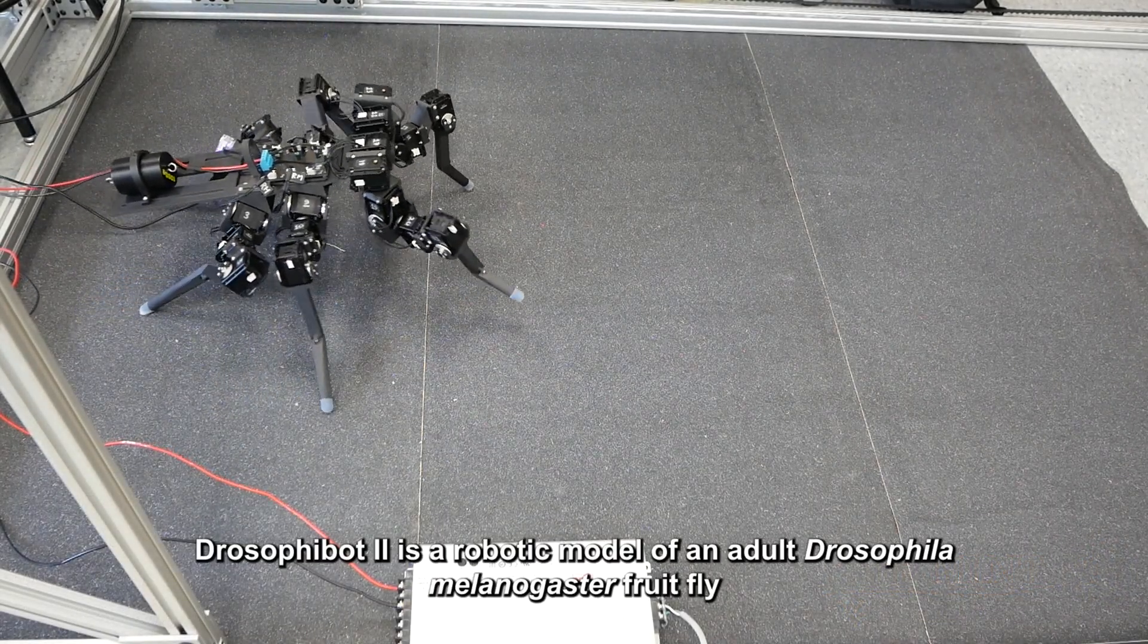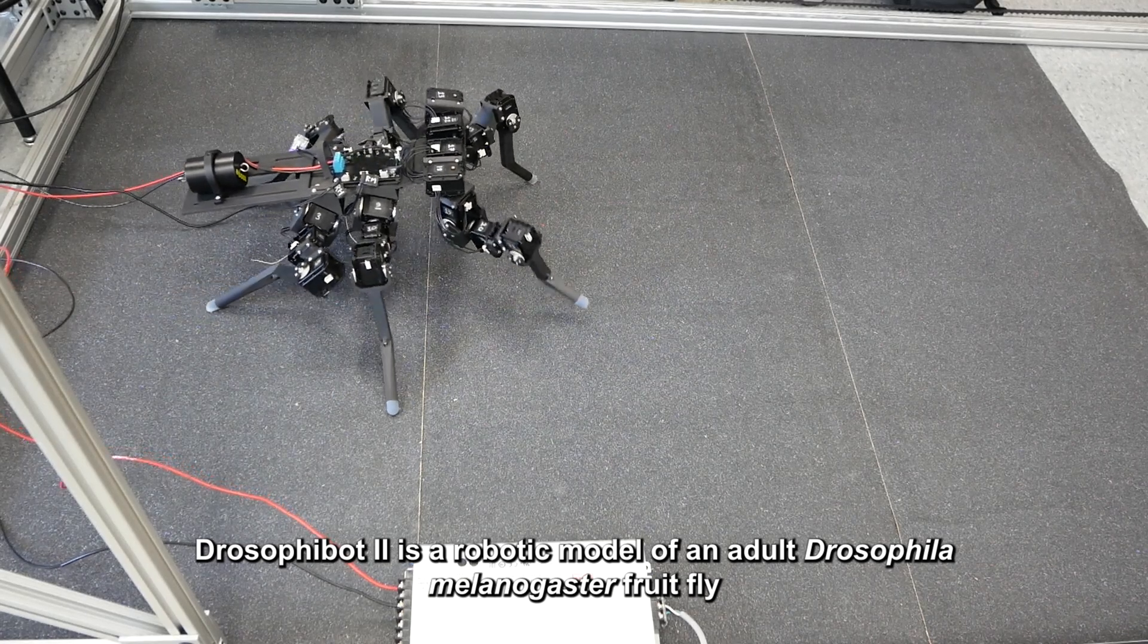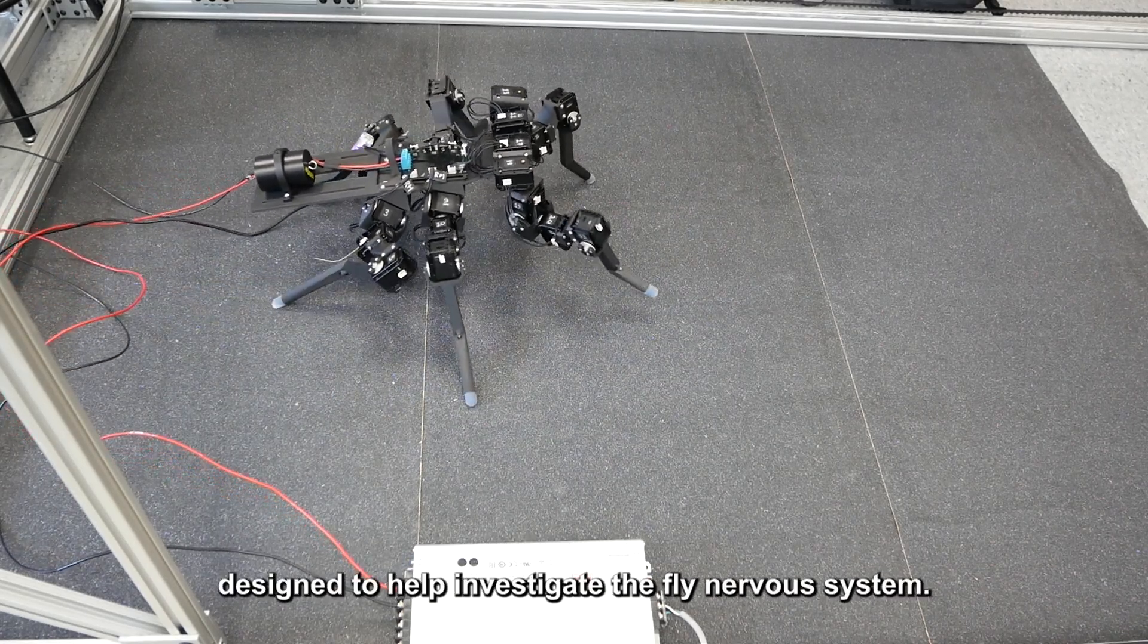Drosophobot 2 is a robotic model of an adult Drosophila melanogaster fruit fly designed to help investigate the fly nervous system.